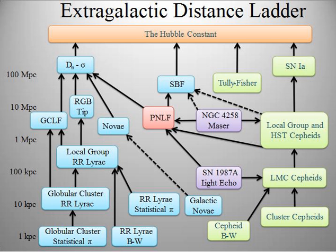For the most luminous of distance indicators, the Type Ia supernovae, this homogeneity is known to be poor; however, no other class of object is bright enough to be detected at such large distances, so the class is useful simply because there is no real alternative. The observational result of Hubble's law—the proportional relationship between distance and the speed with which a galaxy is moving away from us—is a product of the cosmic distance ladder. Edwin Hubble observed that fainter galaxies are more redshifted. Finding the value of the Hubble constant was the result of decades of work by many astronomers, both in amassing the measurements of galaxy redshifts and in calibrating the steps of the distance ladder. Hubble's law is the primary means we have for estimating the distances of quasars and distant galaxies in which individual distance indicators cannot be seen.